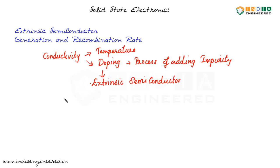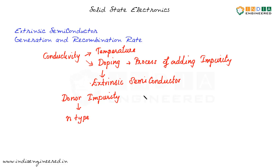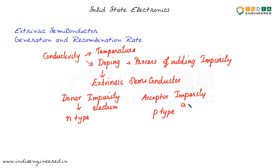We add impurity to increase or control the conductivity of the semiconductor material. The type of impurity we add determines what type of extrinsic semiconductor we generate. If we add donor impurity — impurities that can donate an electron — we get an n-type semiconductor. If we add acceptor impurity, we get a p-type semiconductor.